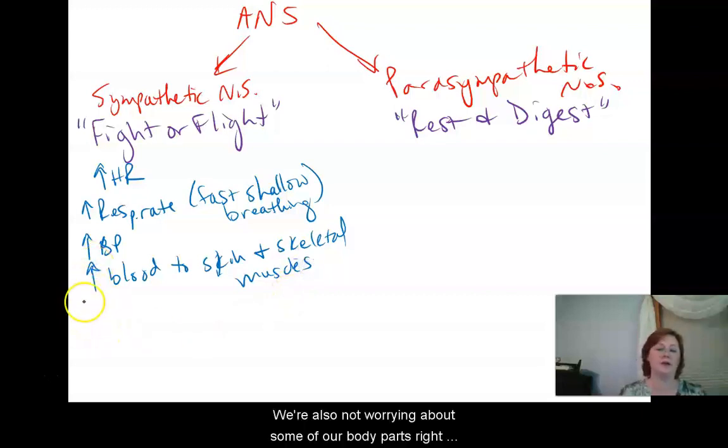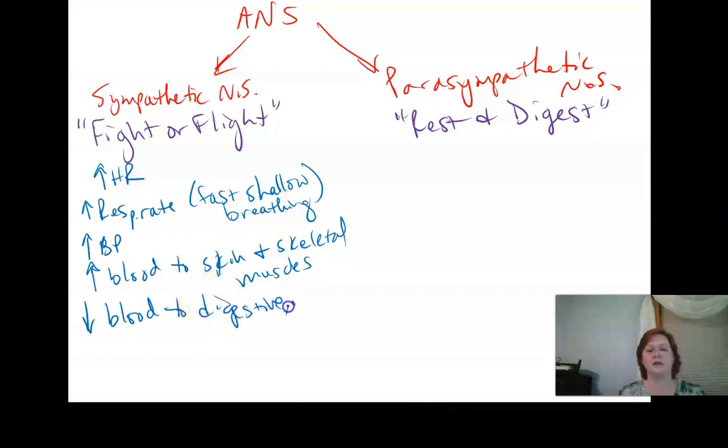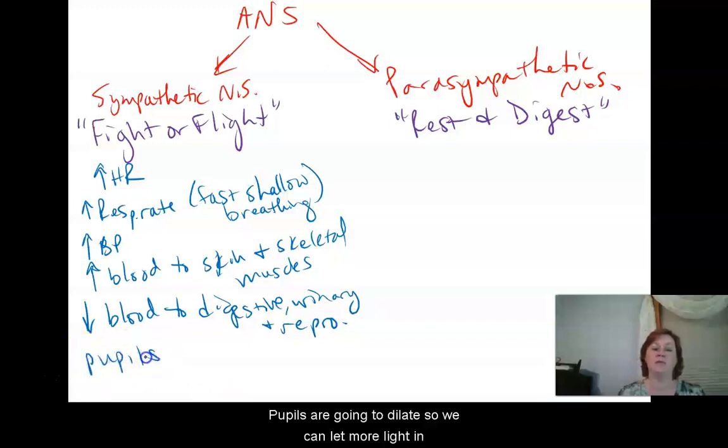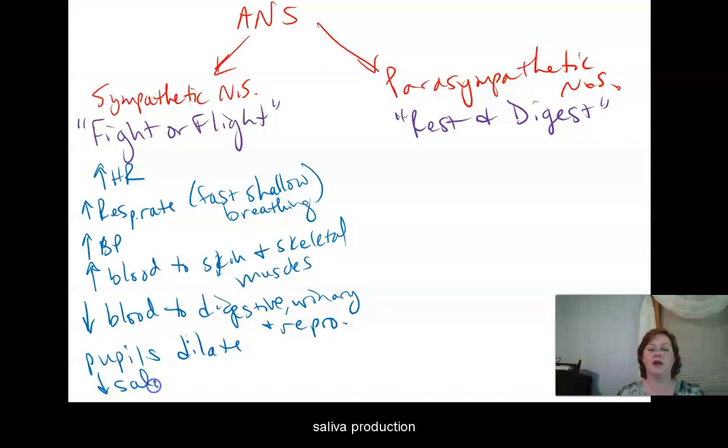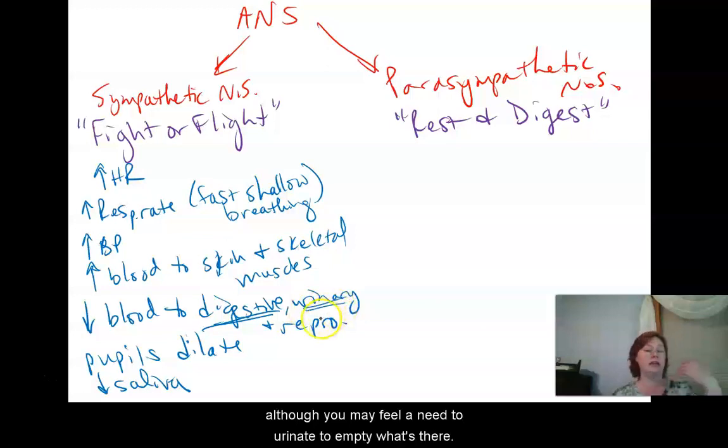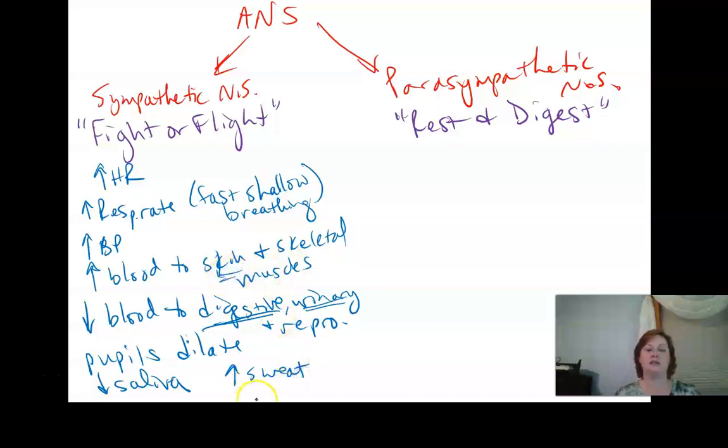We're also not worrying about some of our body parts right now, so we are going to decrease blood to pretty much all of your abdominal organs, so to your digestive, urinary, and reproductive tracts. Your pupils are going to dilate so we can let more light in, so we can see better for that emergency. We're going to decrease saliva production or digestive enzymes in general because of course we're decreasing digestive function. We're decreasing urine production, although you may feel a need to urinate to empty what's there. You are going to have increased sweat because that's part of stimulating our skin.